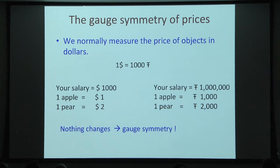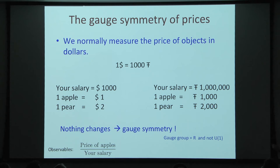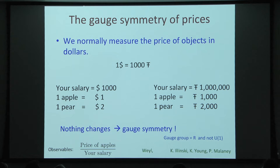Notice this is exactly a gauge symmetry — not an analogy, an exact gauge symmetry. The gauge group is R, but not U(1); that's the only difference with electromagnetism. The good observables are gauge invariant quantities, such as the ratio of the price of apples versus your salary. This is very close to what Weyl had in mind with the concept of gauge symmetry, and in this context of economics it was discussed before by some authors in the American Journal of Physics.